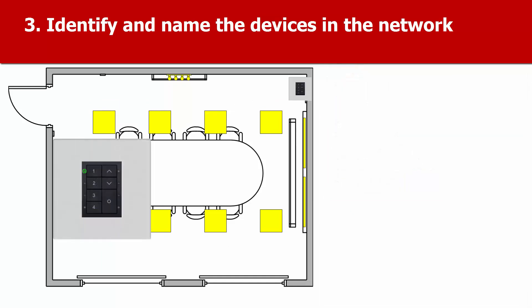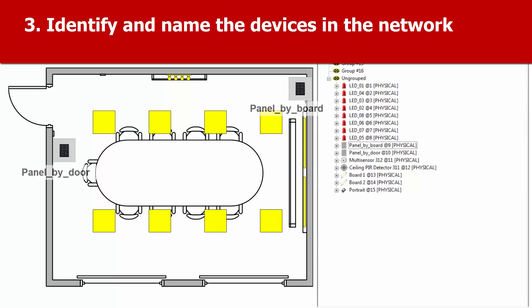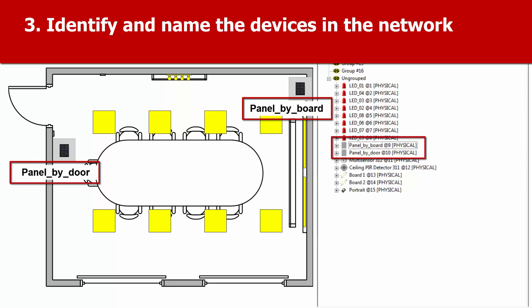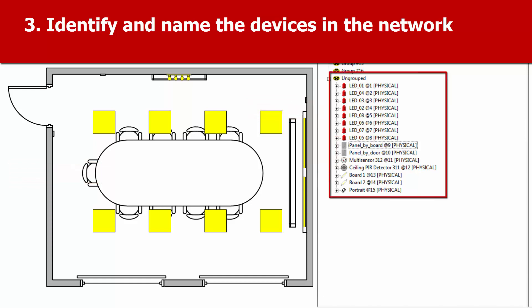When you identify a Helvar panel or sensor, an LED light will flash until you cancel identification. Then you can name the panels. As there's only one of each type of sensor, we'll leave their names.